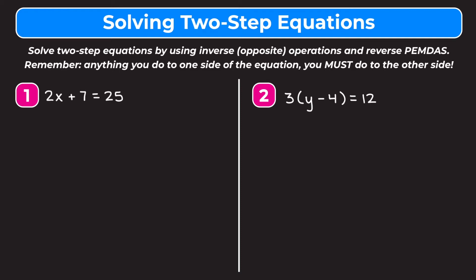Example one is 2x plus 7 is equal to 25. Our goal is to get x by itself. In order to do that we have to get rid of this plus 7 and this 2 on the left side of our equation. We're going to use inverse or opposite operations and reverse PEMDAS.